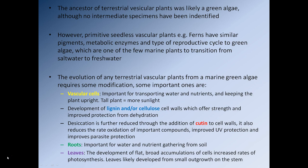Even though we are missing some intermediate fossils, we can look at the biochemistry and reproductive cycles of plants and compare them to green algae. Very primitive seedless vascular plants — like ferns — have similar pigments, metabolic enzymes, and the same type of reproductive cycle as green algae. This strongly suggests a link between these early seedless vascular plants and green algae.